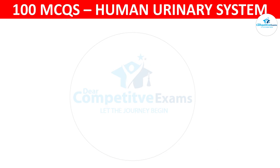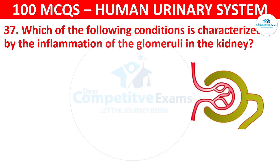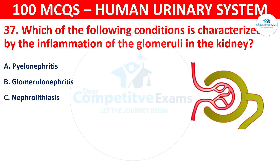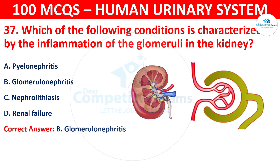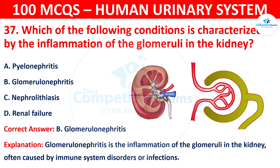Question 37: Which of the following conditions is characterized by the inflammation of the glomeruli in the kidney? The correct answer is B, that is glomerulonephritis. Glomerulonephritis is the inflammation of the glomeruli in the kidney, often caused by immune system disorders or infections.